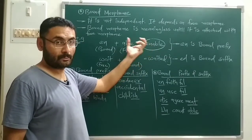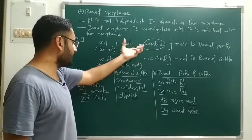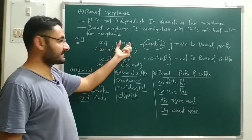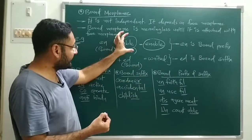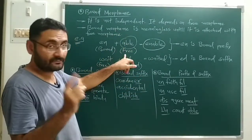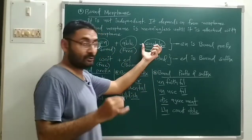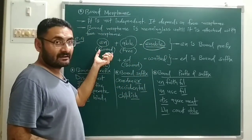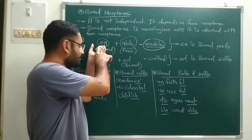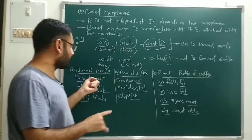Second, morphemes cannot be divided further. Whatever word you have taken which has some meaning, that word cannot be divided. If we divide morphemes, it results in meaningless remainders. So: morphemes have some meaning, and we cannot divide them further.